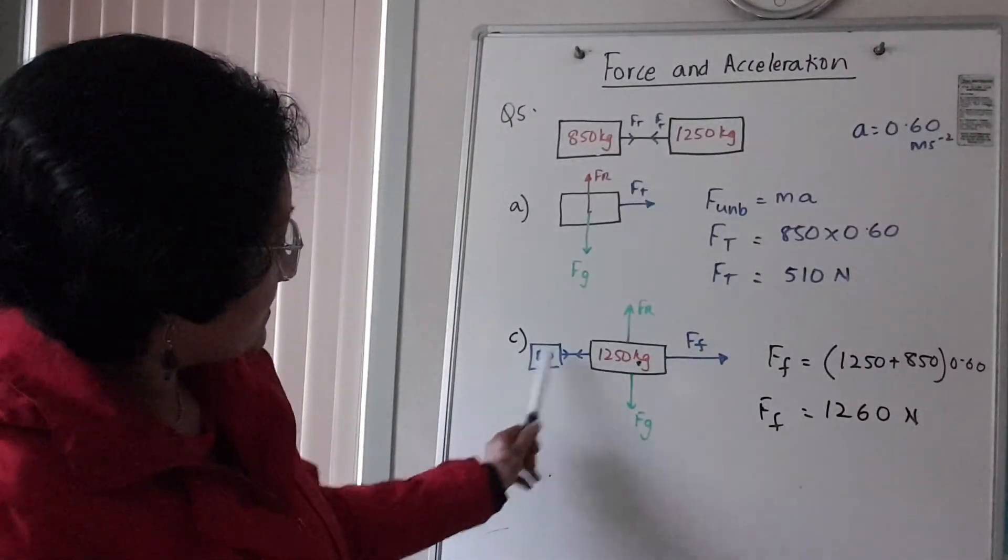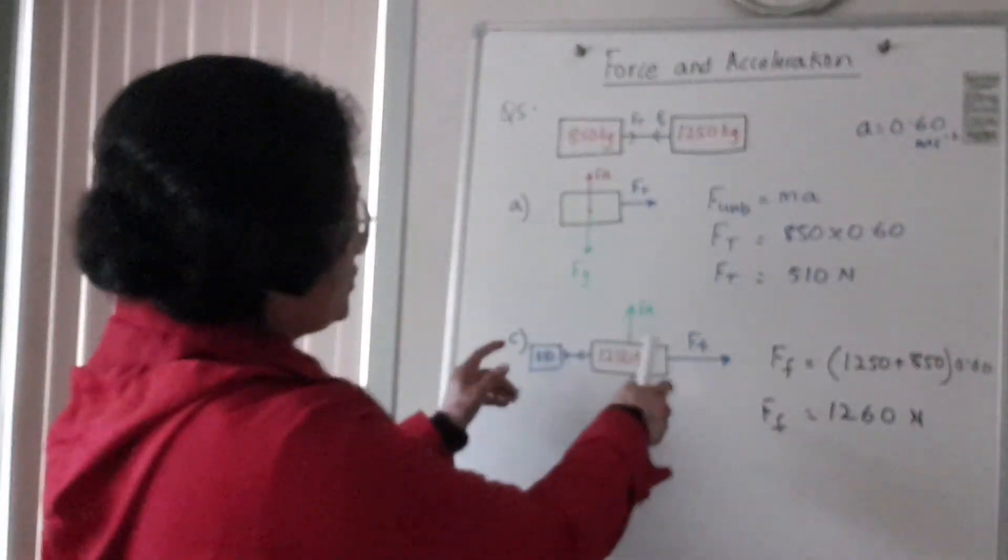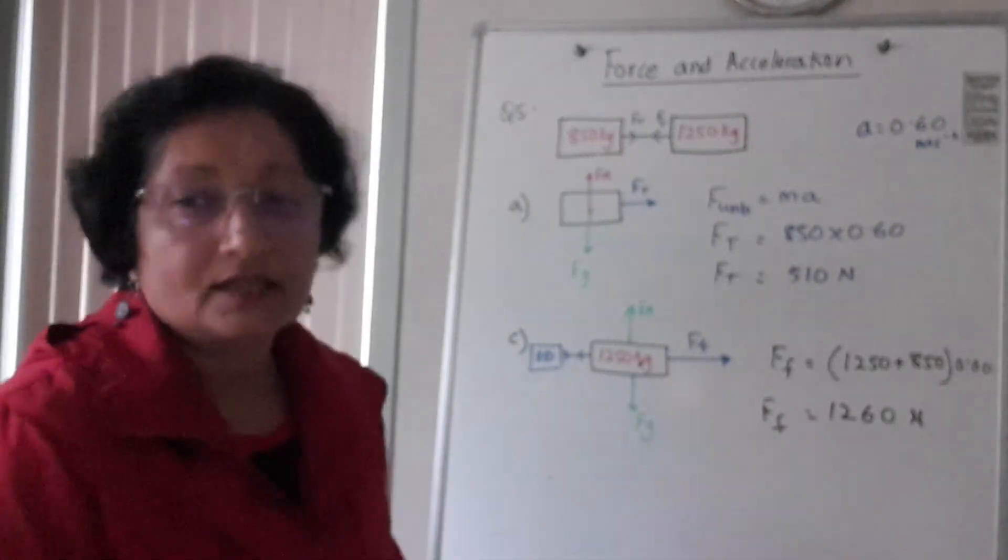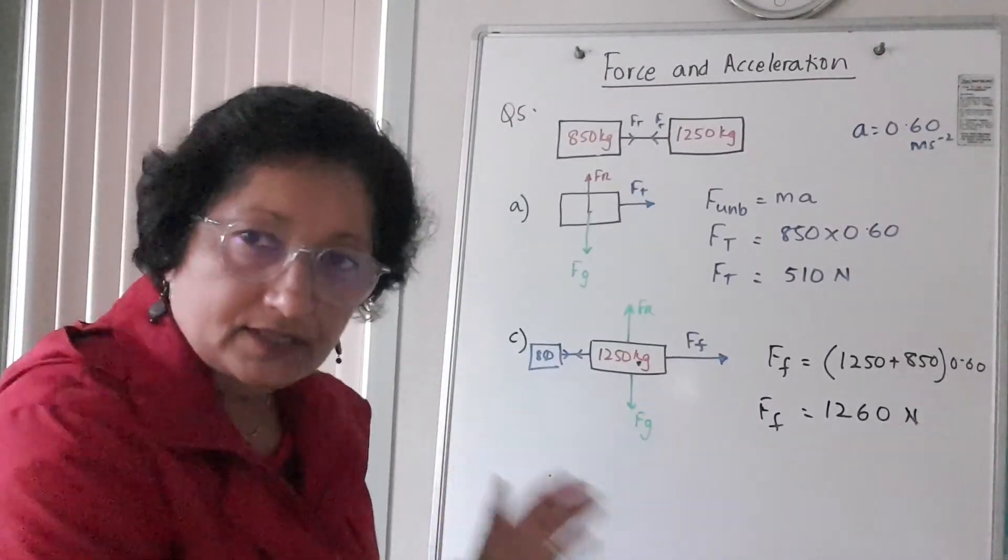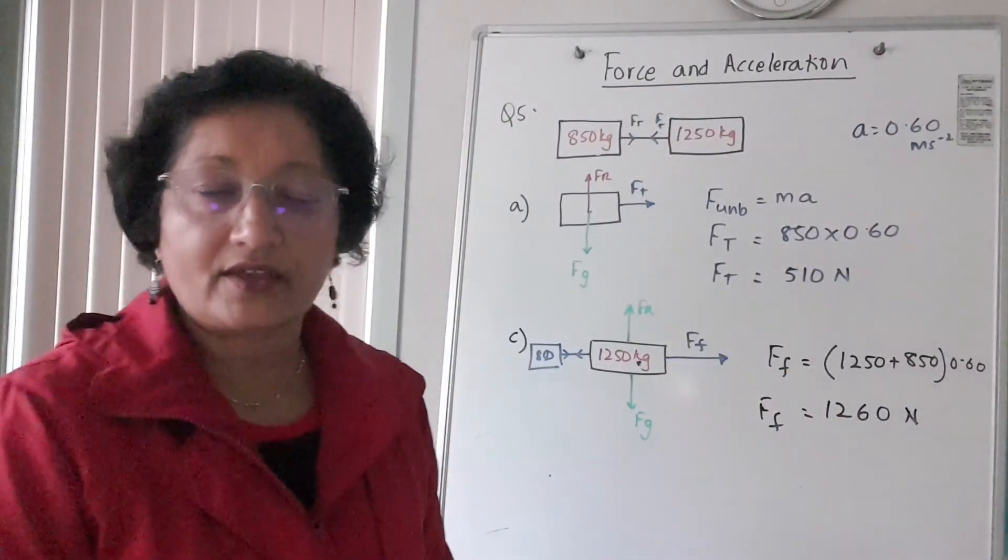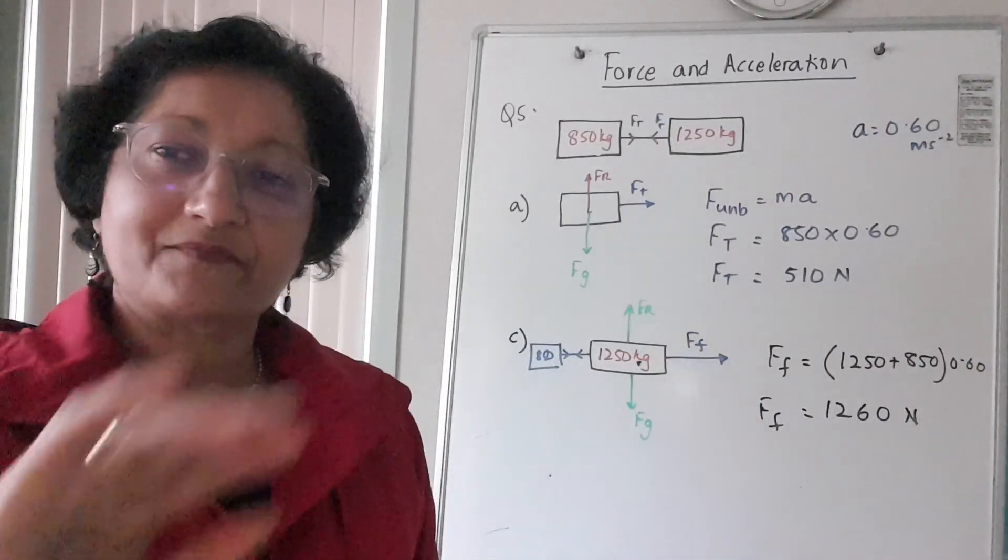So that's how you get it. Because they're two masses, because they're attached, you've got to have both the masses in order to get that forward force because they're both accelerating forwards. So I hope that made sense. Bye for now.